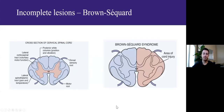Brown-Séquard syndrome is the classic hemi-section of the spinal cord, typically resulting from penetrating trauma but also seen in lateral mass fractures of the cervical spine. You get ipsilateral loss of motor power and vibration/proprioception, as those tracts cross in the brainstem, and contralateral loss of pain and temperature via the spinothalamic tract, which crosses within one to two levels of where sensory fibers enter the cord. Virtually all these patients maintain bowel and bladder function as well as unilateral motor strength, and most eventually become ambulatory.